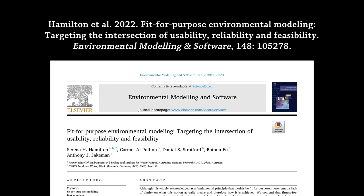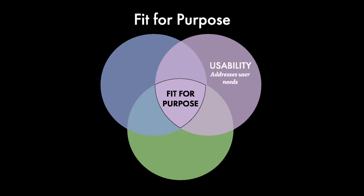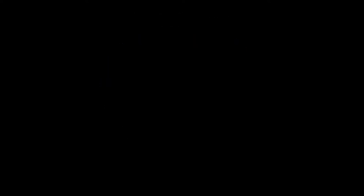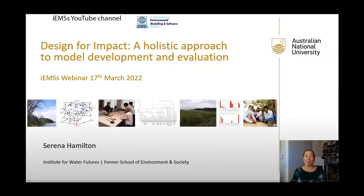The model selection process also draws on a recent paper with my colleagues, in which we framed model selection in terms of usefulness, reliability and feasibility — we call this fitness for purpose. Usefulness is about addressing the needs of the end-user, including their skills and capacities and consideration of how the model will be used. Reliability is about obtaining an adequate level of certainty and trust in the model given the problem context, considering how well the system and its processes are understood, as well as the nature of the problem. Feasibility is about whether the model can be developed given the practical constraints of the project, including data, time and expertise available. This fit-for-purpose framework is described in more detail in an IMS webinar called Design for Impact: a holistic approach to model development and evaluation.